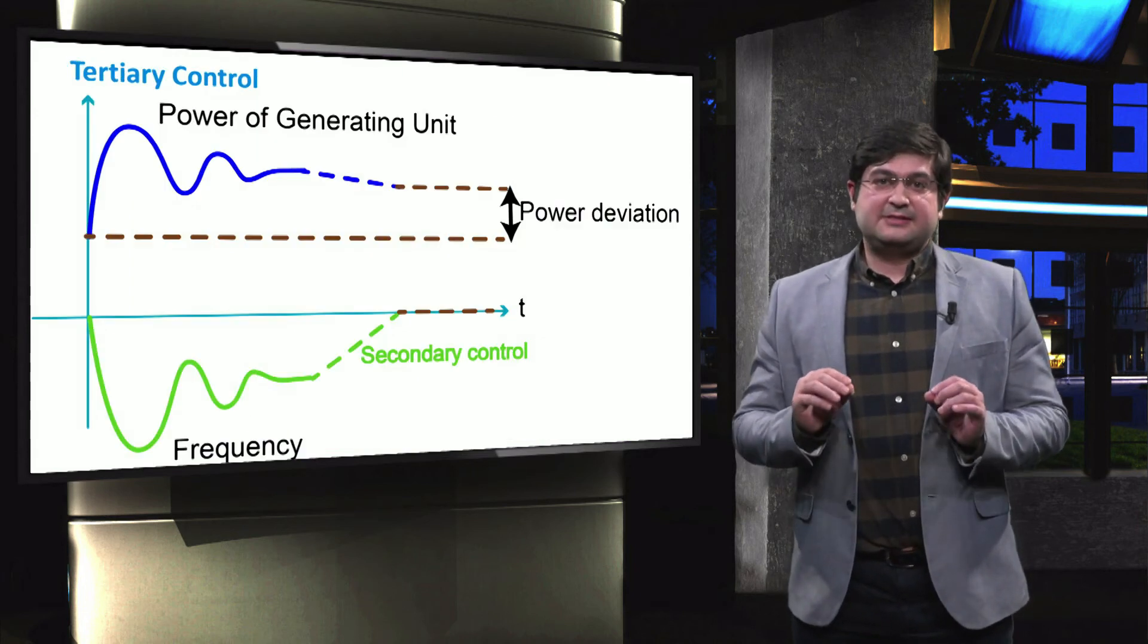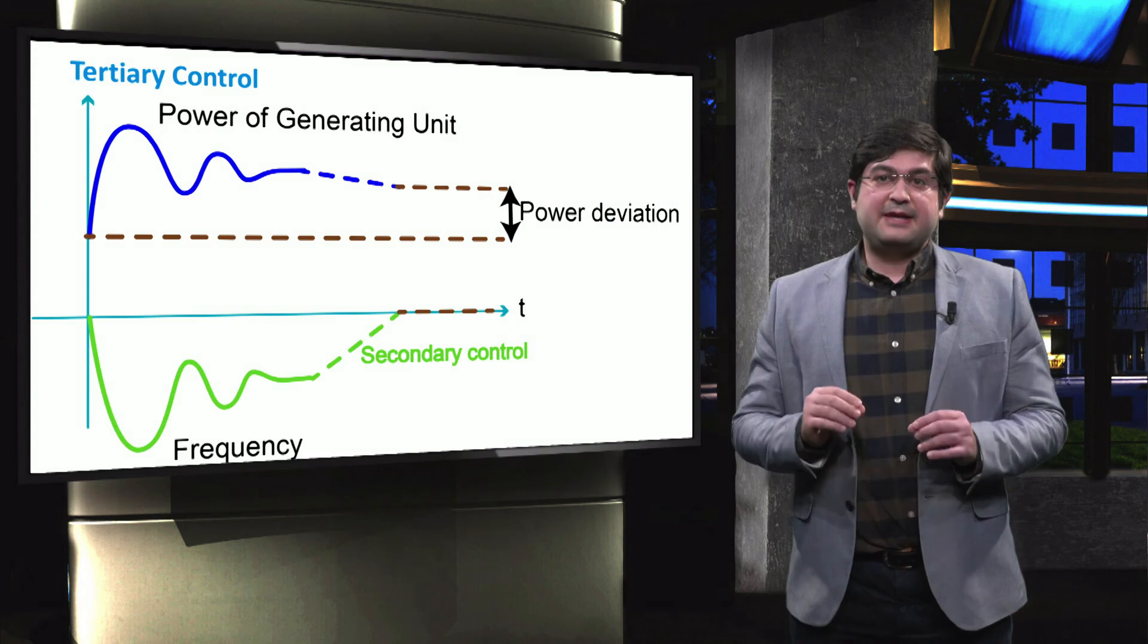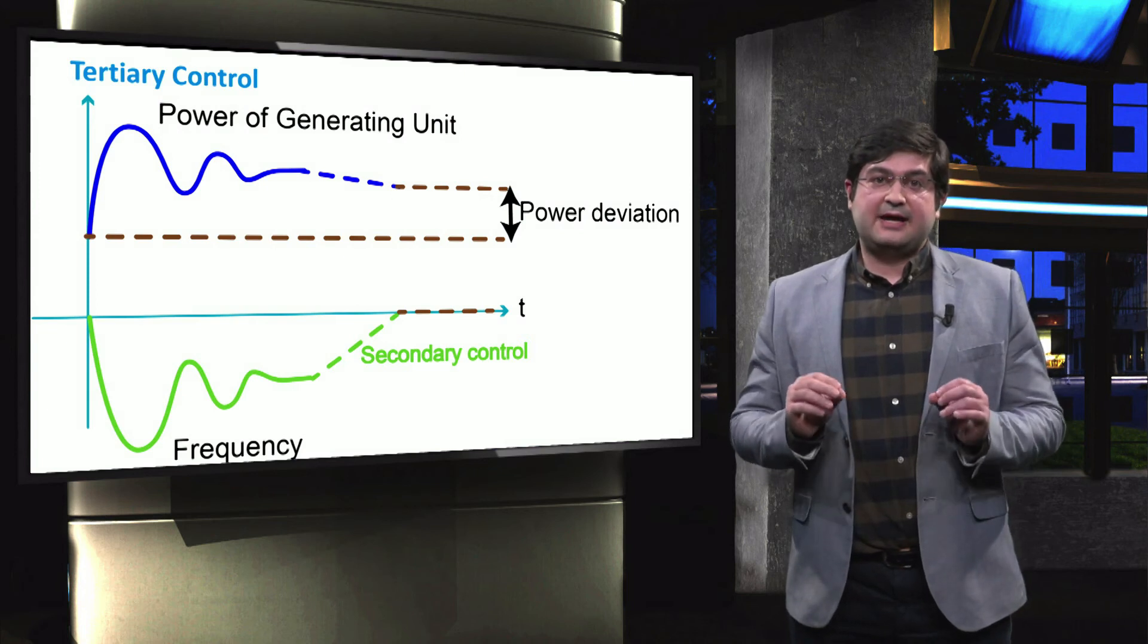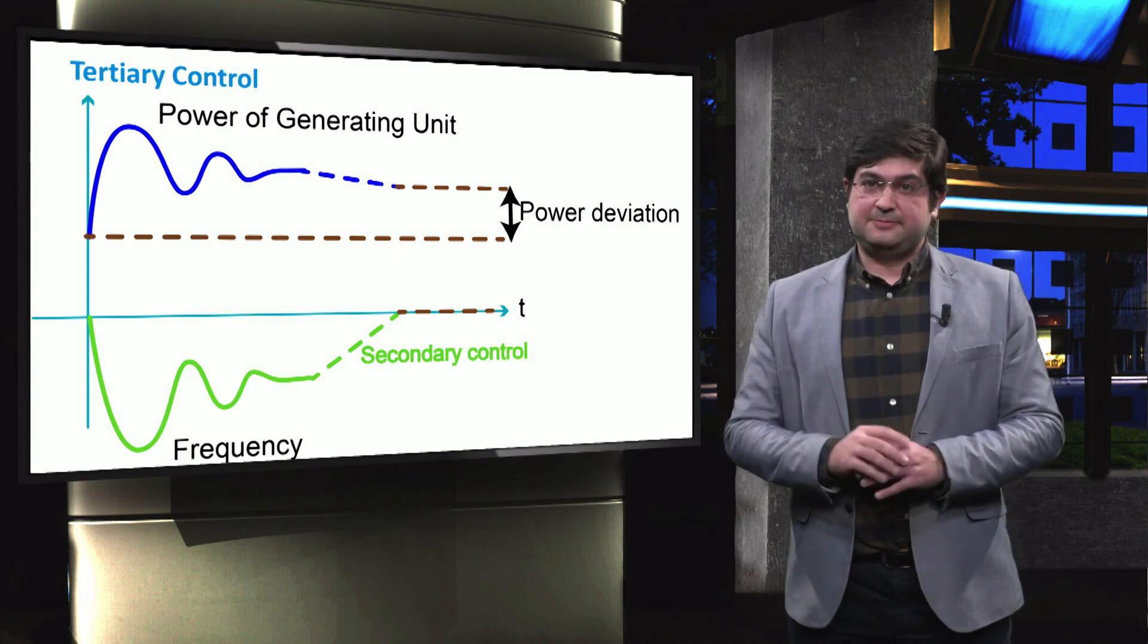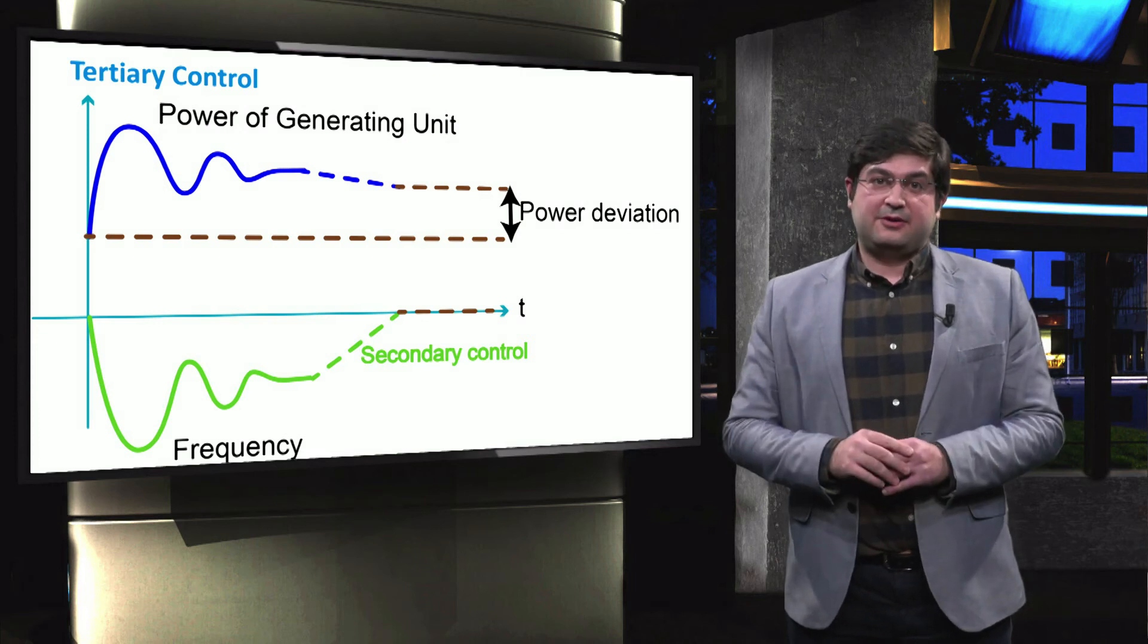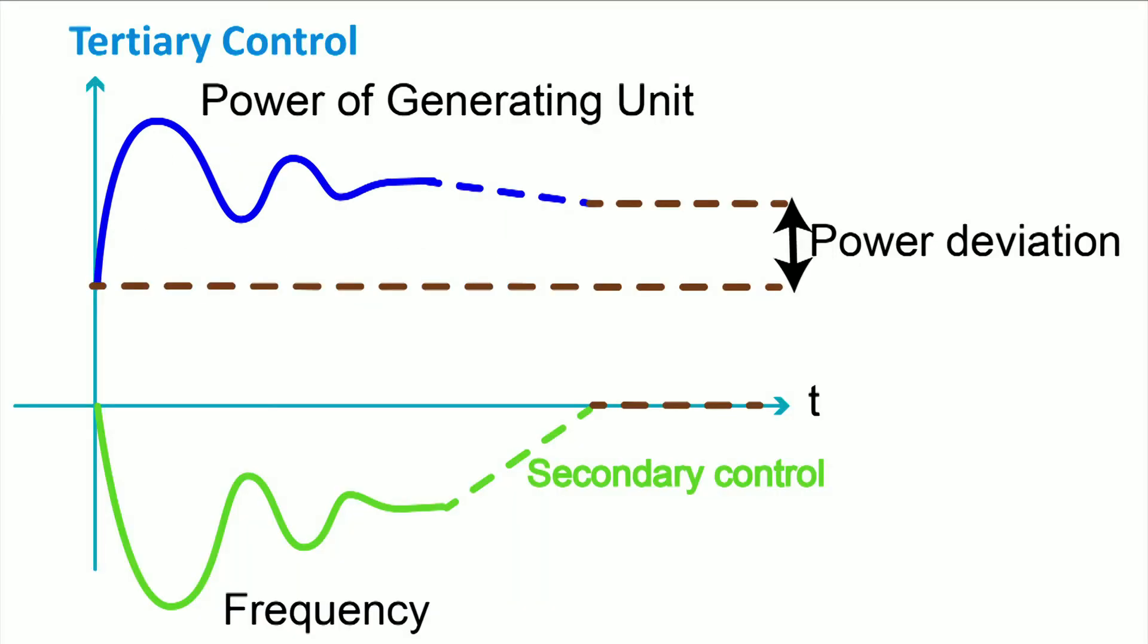So far, we discussed that the secondary control helps maintain the level of the frequency at the nominal values after the disturbance, as it is shown in the green curve. To achieve this, however, the power set points of the generating units need to be adjusted during the disturbance, as it is shown in the blue curve. Therefore, there will be steady state deviations for the power of the generating units before and after the disturbance.